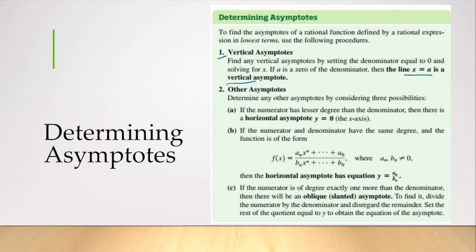Next, you want to determine if there are other asymptotes. You follow this ABCs, but if you hit A, you don't have to move on. In A, if the numerator has lesser degree than the denominator, then there's a horizontal asymptote at y equals 0. We saw two horizontal asymptotes at y equals 0.